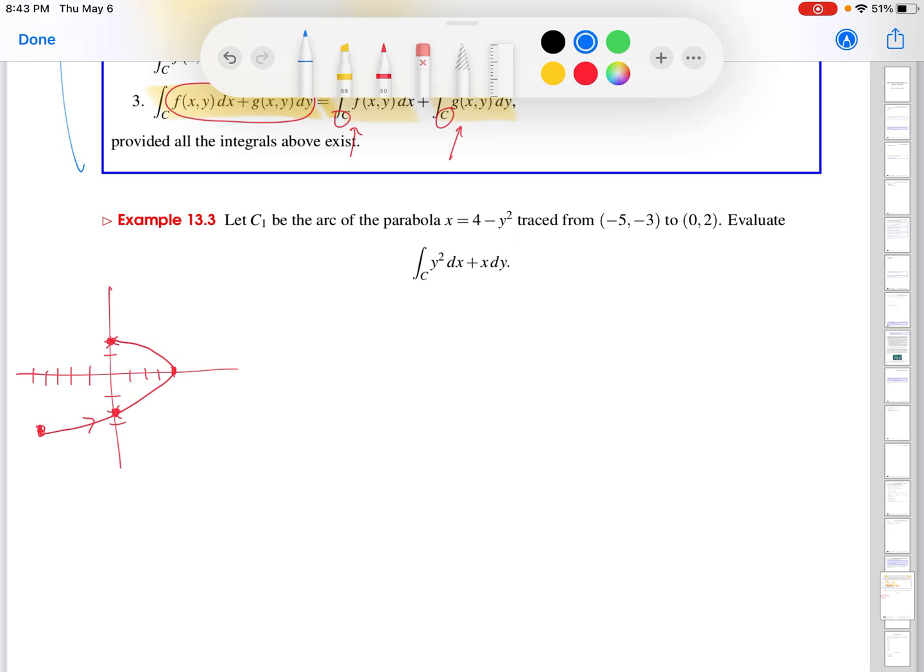And how am I going to parametrize this? Well, taking the cue from the fact that one variable was already solved in terms of the other, I'm going to let x, I'm going to choose y to be t. And then x is going to be 4 minus t squared. And again, if I substitute that in there, I get x equals 4 minus y squared. Check. Since that is the curve that I'm given. So I have my parameterization.